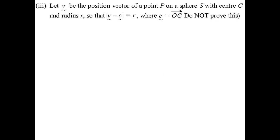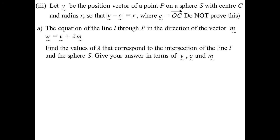V is the position vector of a point P. It's on a sphere S, center C radius R. So in other words, the equation of the sphere is the magnitude of V minus C is equal to R. Where C is the vector OC. Do not prove this. Okay. So in other words, this is all information that we know. Part A. Strap yourselves in. The equation of the line L through the point P in the direction of the vector M would end up being W equals V plus lambda M. So all they're really saying is we've got a vector. It goes through V. Its direction vector is M. That's all it's really saying.